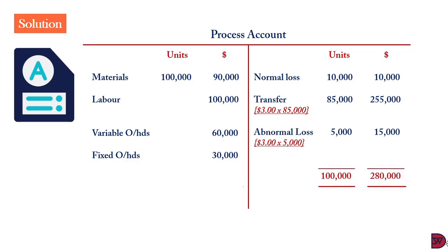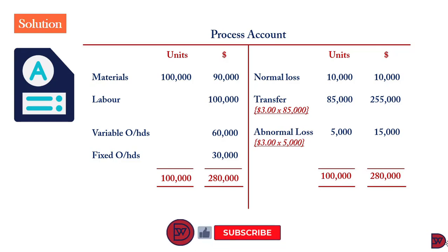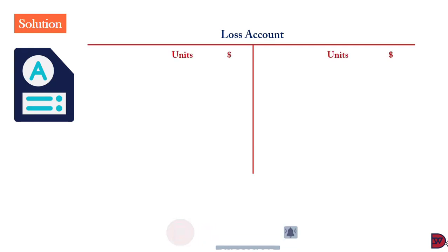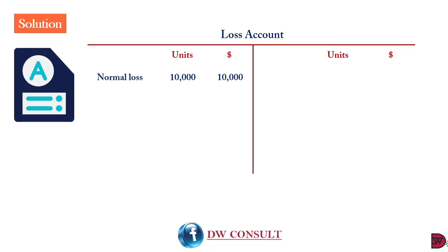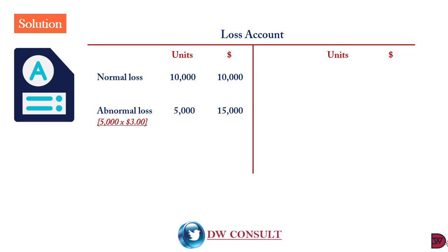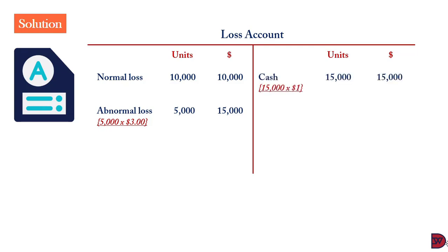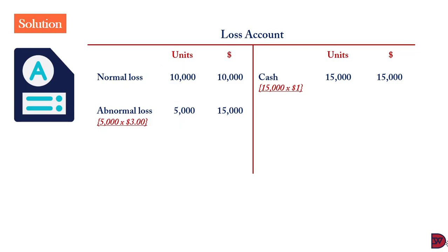When we close the process account, the units are 100,000 on both sides, and the cost is $280,000 on both sides. Moving to the loss account, we bring units and amounts again. Normal loss: 10,000 units at $10,000 (scrap value of $1), debited as a loss expense. Abnormal loss: 5,000 units valued at the cost per unit of $3, giving $15,000. For cash, both the normal loss and abnormal loss of 15,000 units total are treated with the same scrap value of $1, giving $15,000 credited as cash.